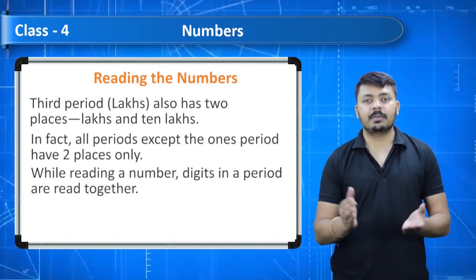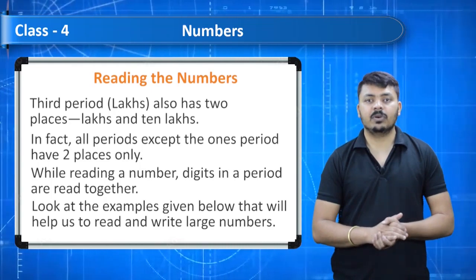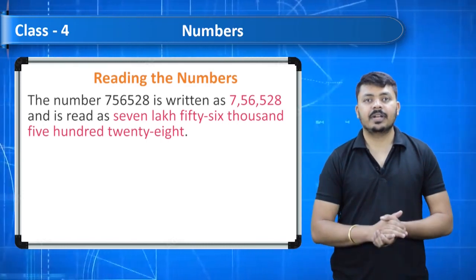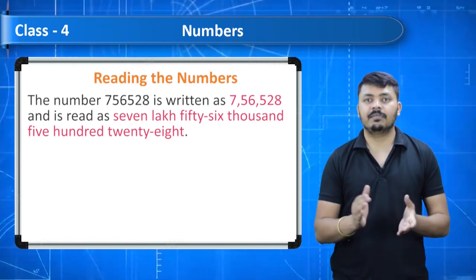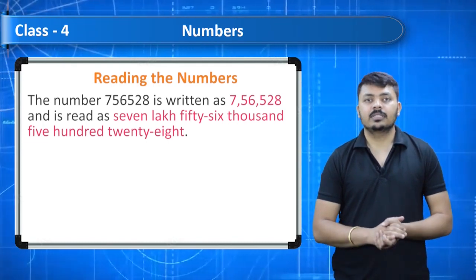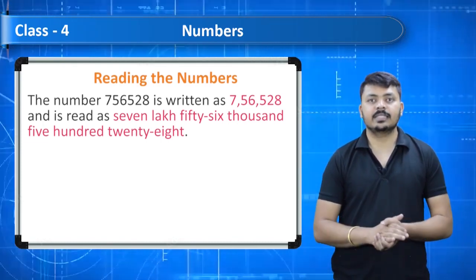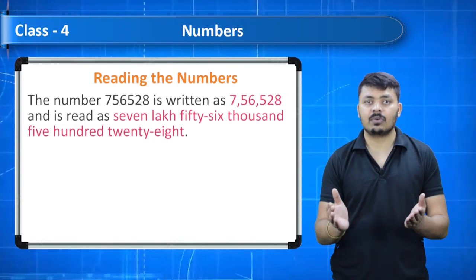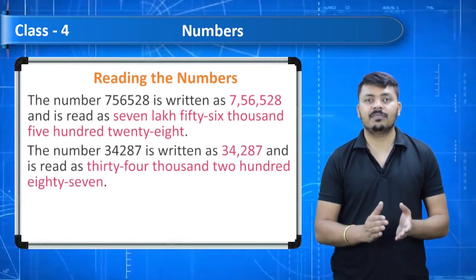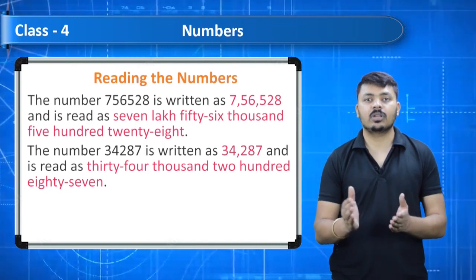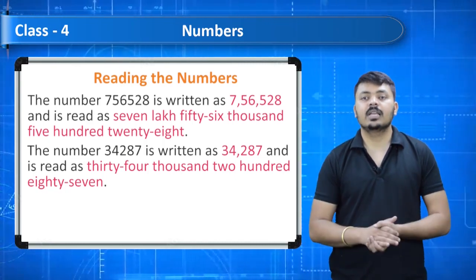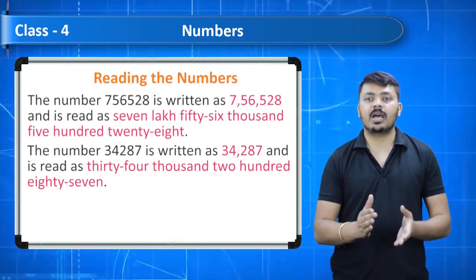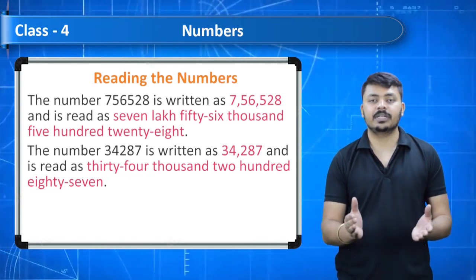While reading a number, digits in a period are read together. For example, the number 7,56,528 is written and read as seven lakh fifty-six thousand five hundred twenty-eight, and 34,287 is read accordingly. Now look at the table which represents some large numbers in the place value chart along with their representation on an abacus.